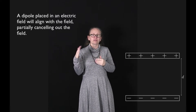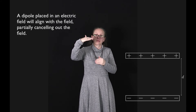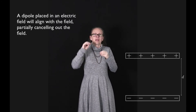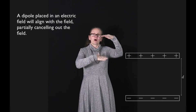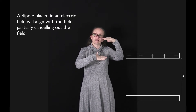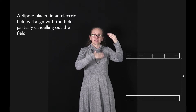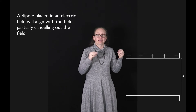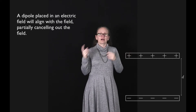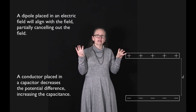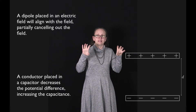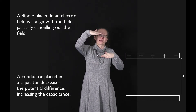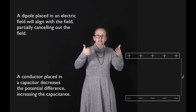Polar molecules have a positive end and a negative end, so they have a permanent dipole moment and align very strongly. In non-polar molecules, we can polarize them — the electric field polarizes them, giving them a positive end and a negative end, which also aligns to cancel out the electric field. We also saw that when we placed a conductor between two plates in a capacitor, it decreased the potential difference and hence increased the capacitance.